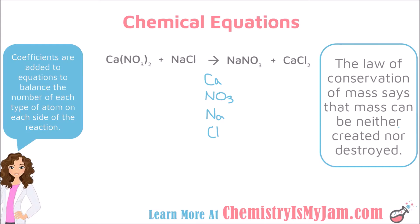The third example features a reaction that contains a polyatomic ion. Notice that the polyatomic stays the same on both sides of the reaction — nitrate on the left and nitrate on the right. When a polyatomic stays together on both sides, you can treat it as one unit, which greatly simplifies balancing. Instead of listing nitrogen and oxygen separately, list the polyatomic together as one thing.